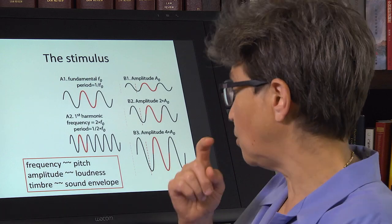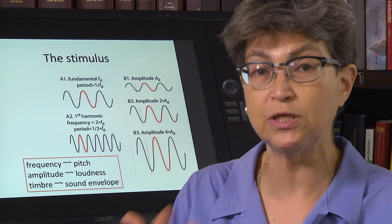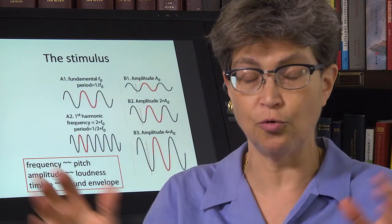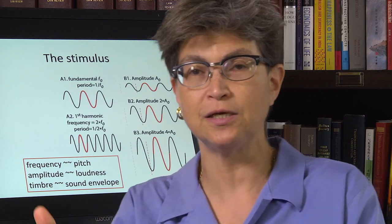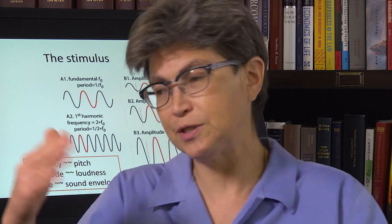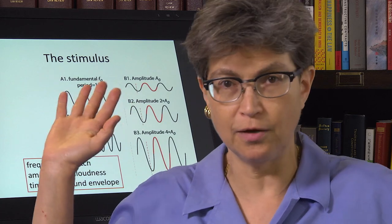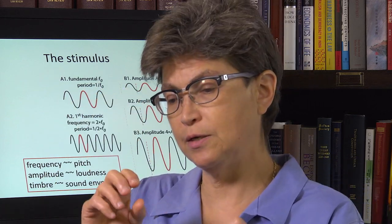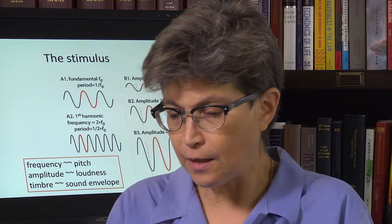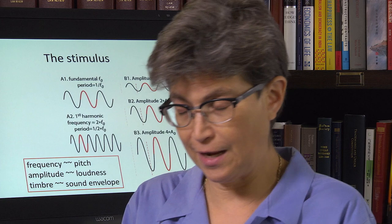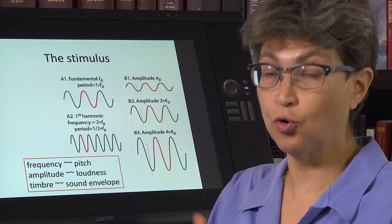And finally, there's something called timbre. There are other features, but these are the ones that we're going to think about. Timbre is essentially the sound envelope. And it's the thing that allows you to say, oh well, that's a middle C played by a flute, whereas that's a middle C played by a trumpet, or that's a middle C played by a viola. So the timbre, the warmth, the feeling of that note can differ according to the envelope.